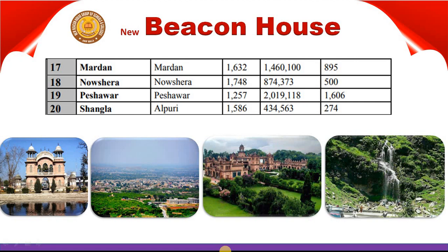The seventeenth district of Khyber Pakhtunkhwa is Mardan. Its headquarter is also in Mardan. It has an area of 1,632 km², a population of 1,460,100, and a density of 8,895 people per km². The eighteenth district is Nowshera. Its headquarter is also in Nowshera. It has an area of 1,748 km² and a population of 874,373.